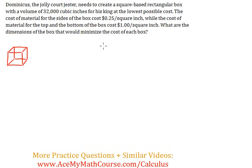This is a minimizing cost optimization problem. Dominicus, the jolly court jester, needs to create a square-based rectangular box with a volume of 32,000 cubic inches for his king at the lowest possible cost.